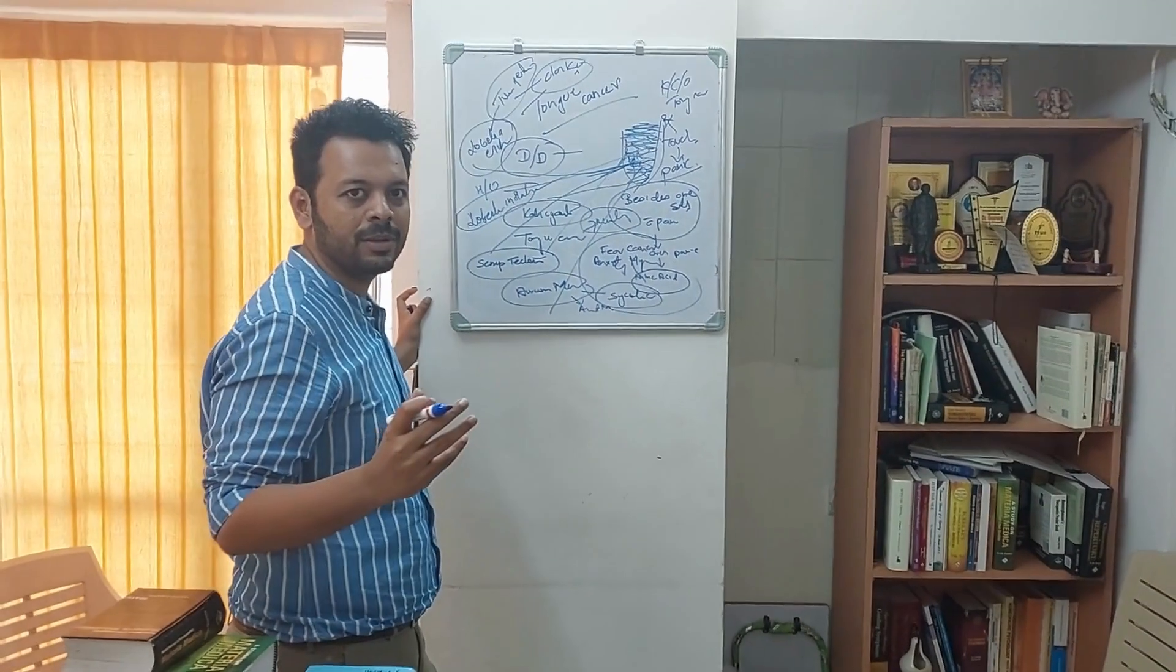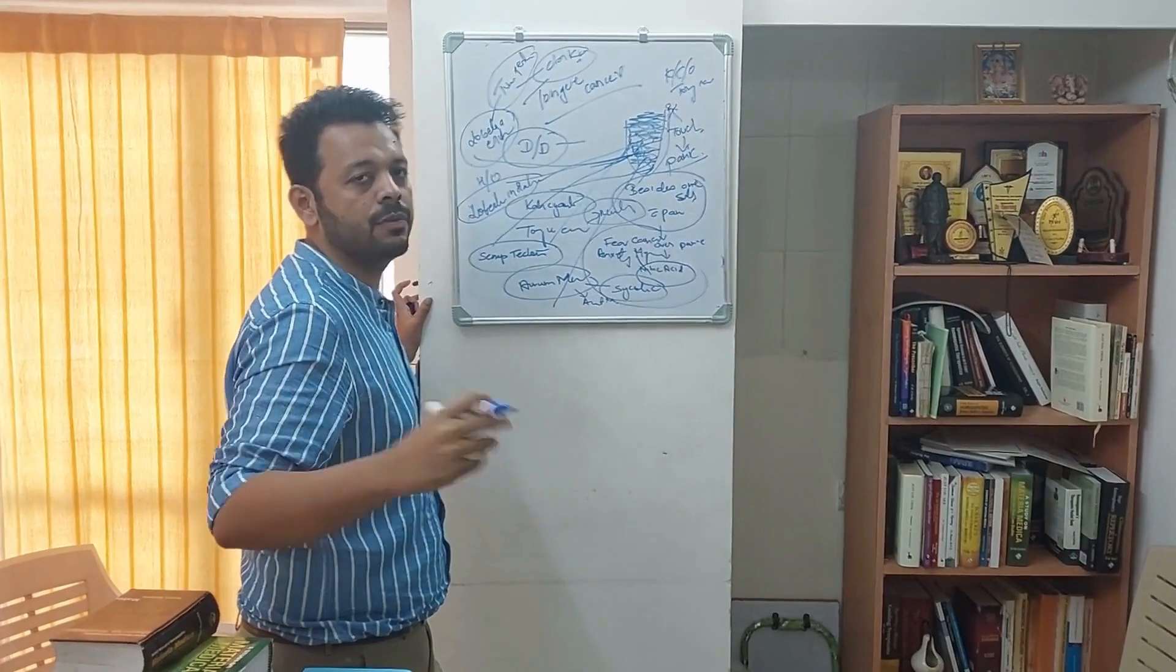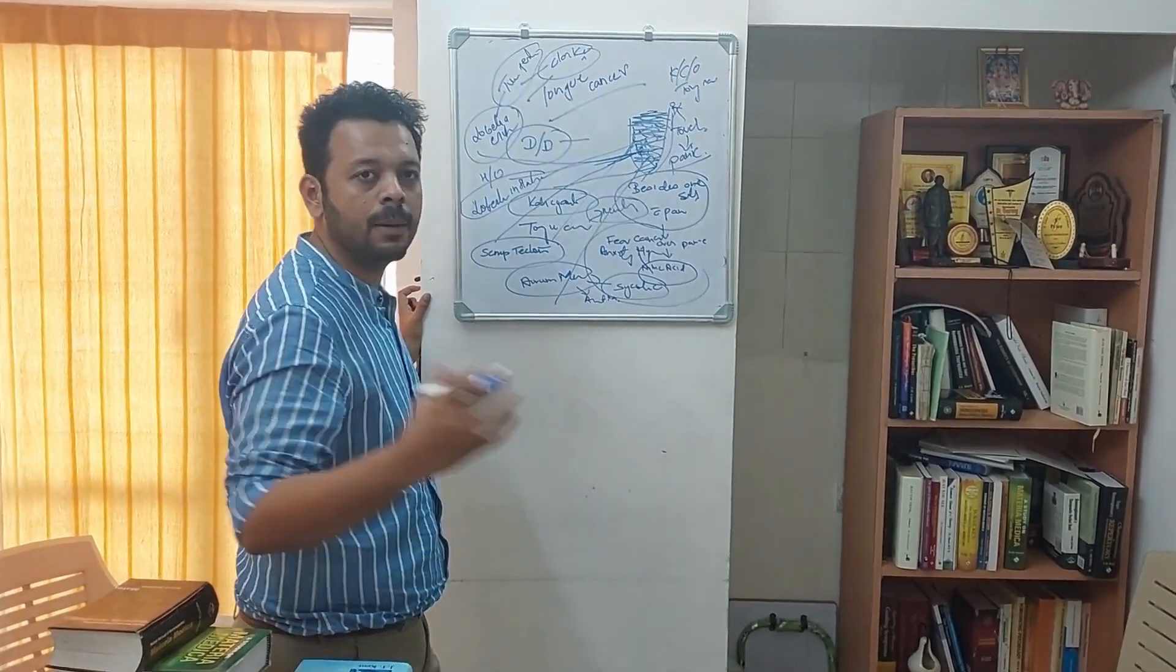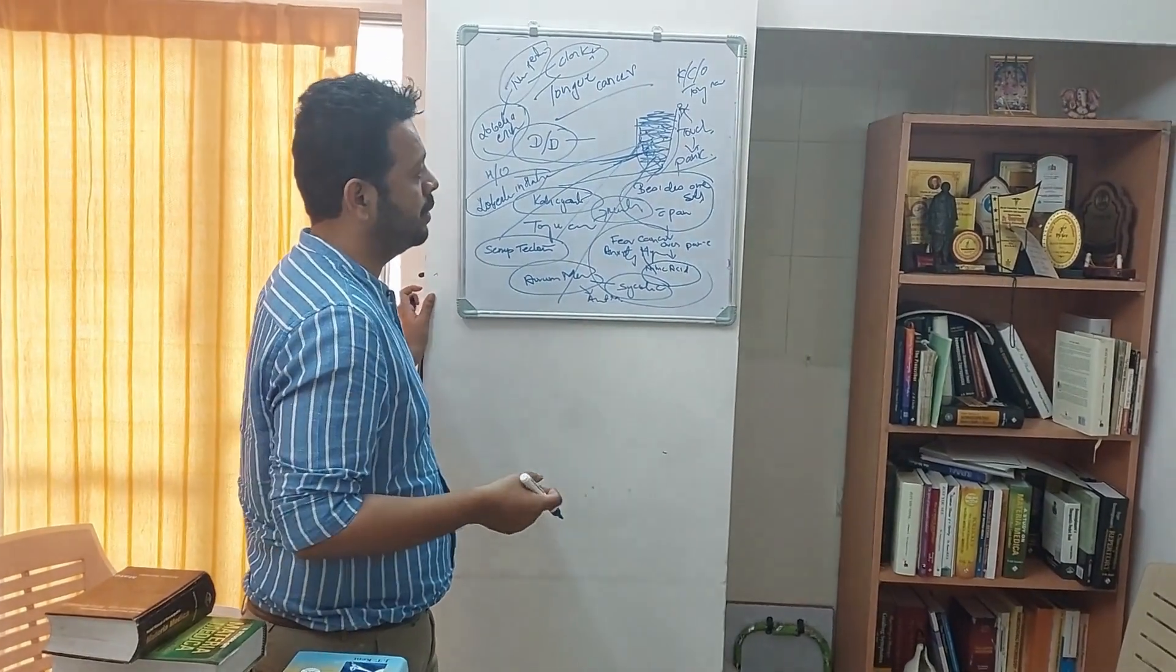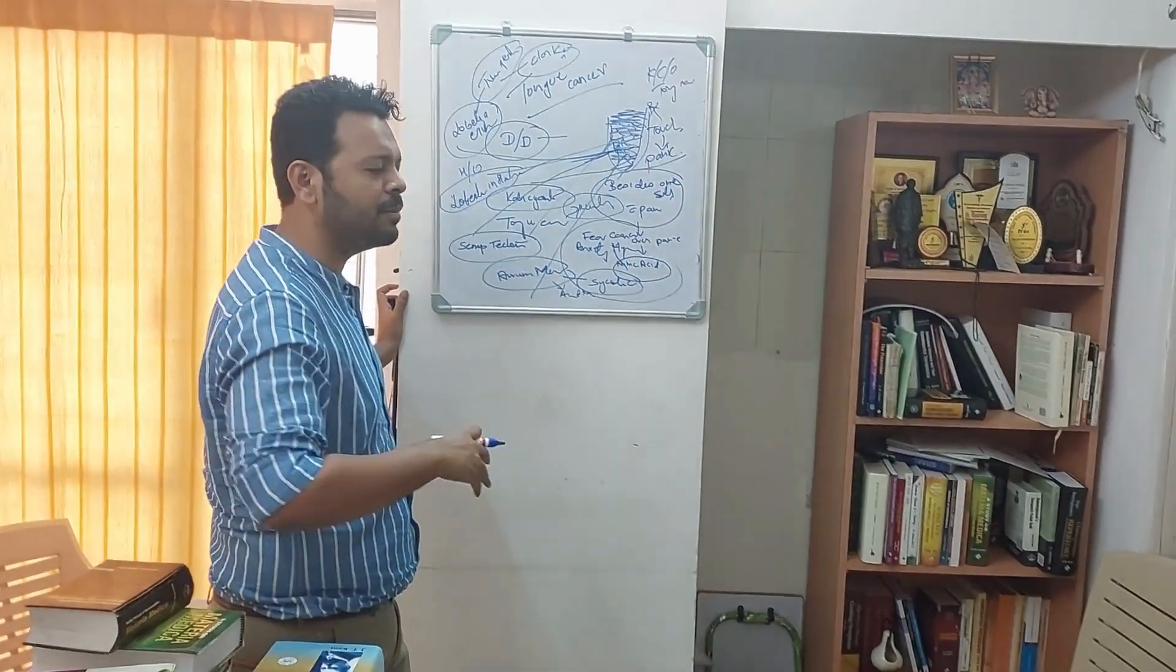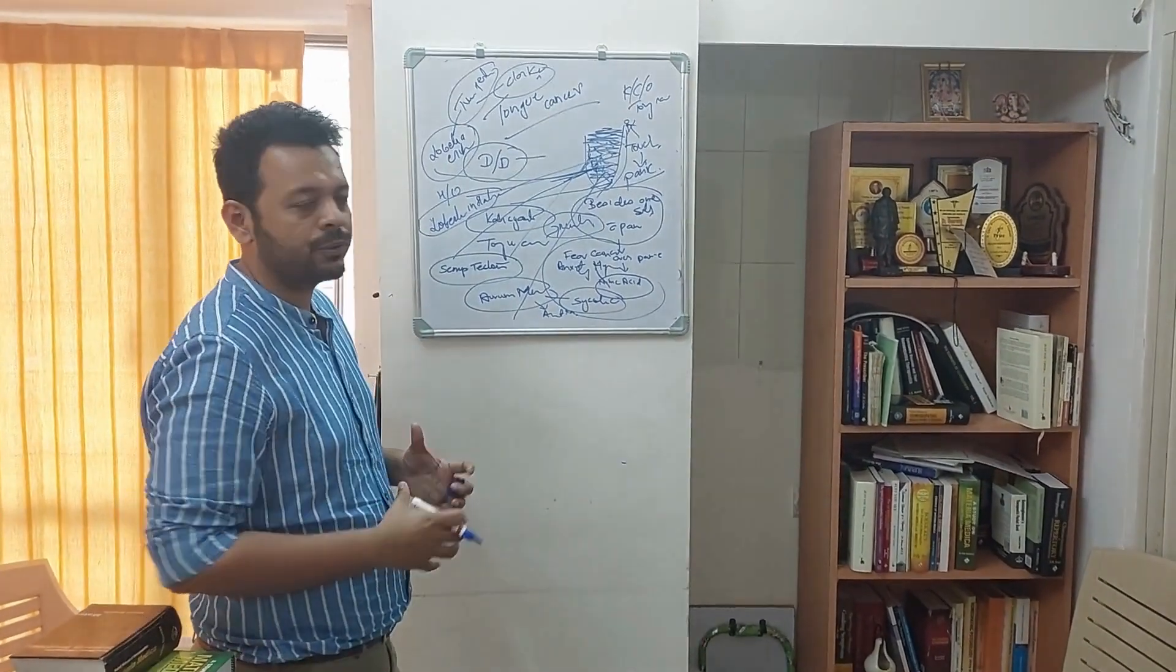There are many more remedies. There is apis with the kind of extreme burning pain. There is conium. We know the idea of conium with the umbelliferae family. Hydrast is another very important remedy for lung cancer. And many many more remedies. We can go on, but I just wanted to give you a kind of a differential diagnosis.